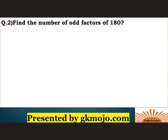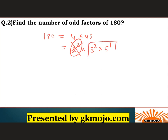Next question: find the number of odd factors of 180. To find odd factors, do not consider even factors — take out all powers of 2. Whatever is left gives you all the odd factors. For 180, the odd part is 3^2 × 5^1, so total odd factors = (2+1)(1+1) = 3 × 2 = 6.